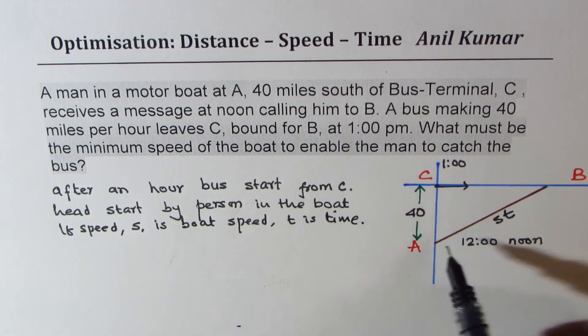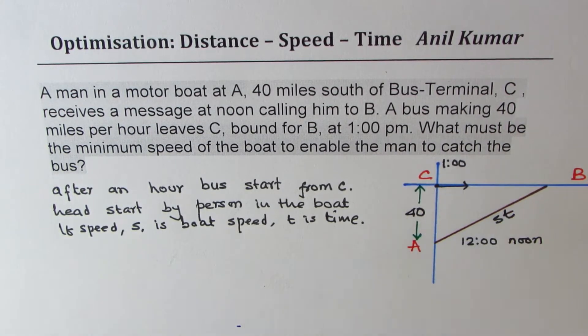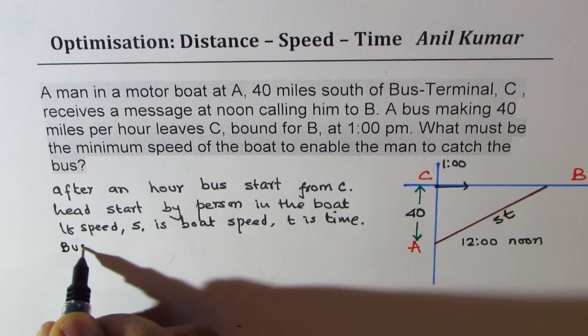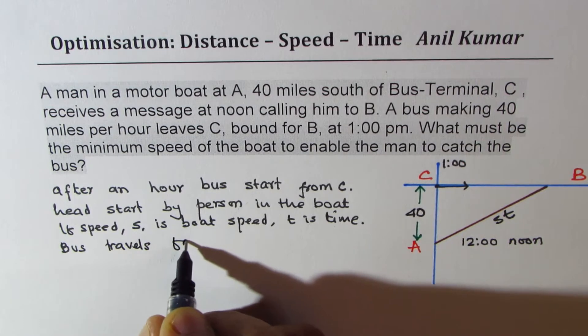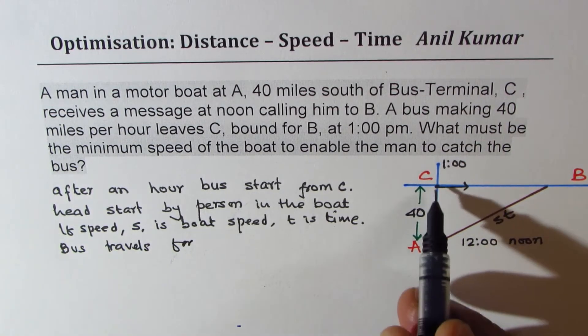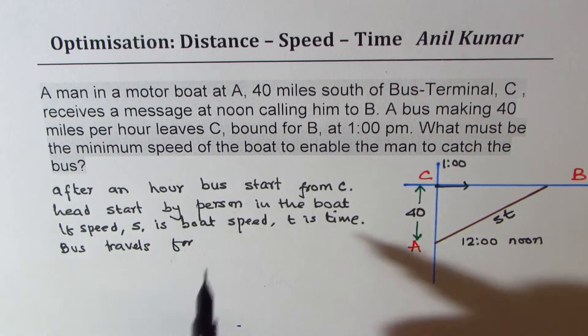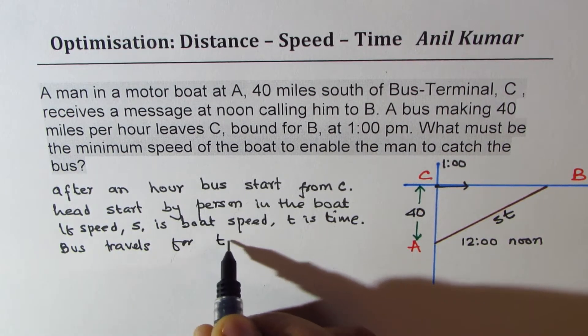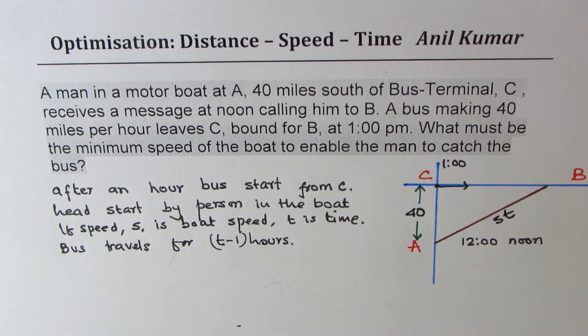Now if the boat is traveling for time t, then how long is the bus traveling? It is clear that the bus travels for 1 hour less, since it starts at 1, not at 12. So bus travels for t minus 1 hours. Does it make sense?